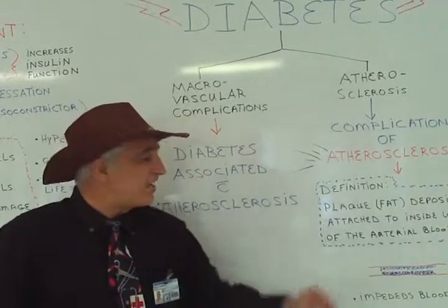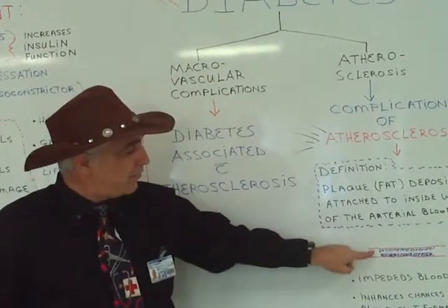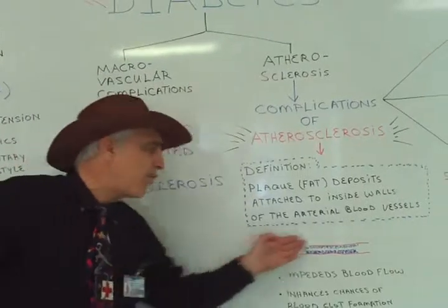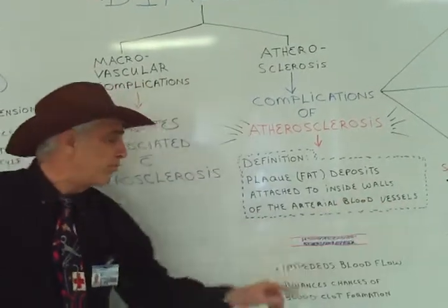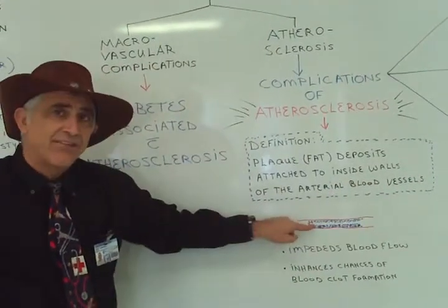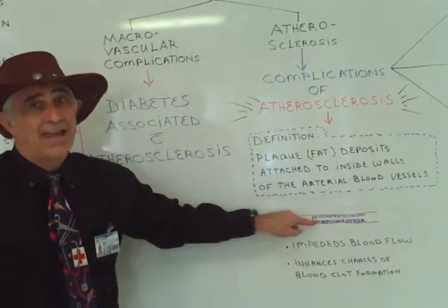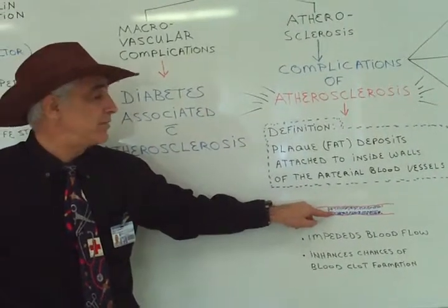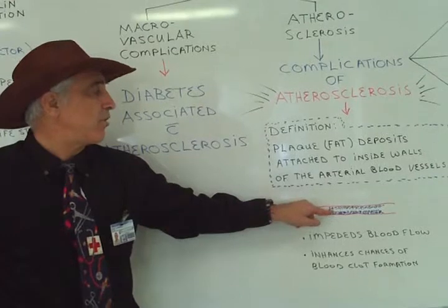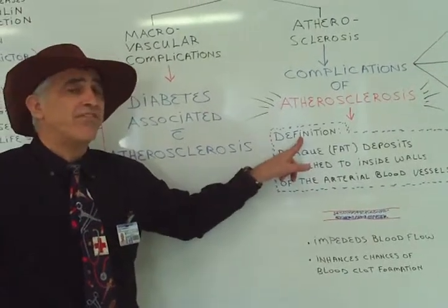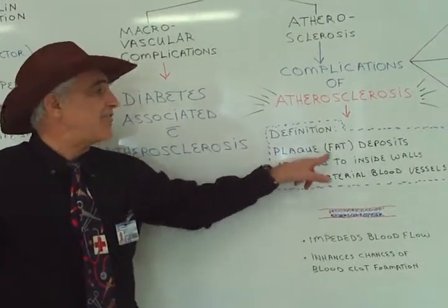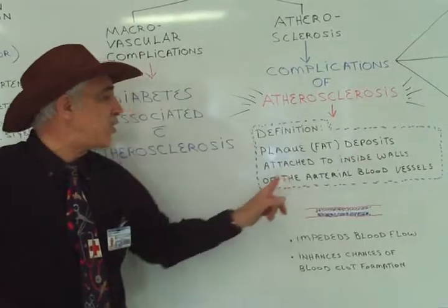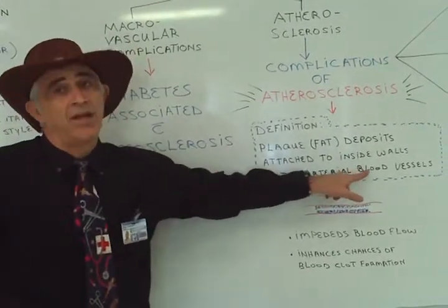Before we define it, let's take a look at it. Here is a blood vessel — there shouldn't be anything on it, it should be clean so the full blood can go through. But look at all those little dots there; that represents plaque. Plaque are fat deposits attached to the inside walls of the arterial blood vessels, and that's what's dangerous.